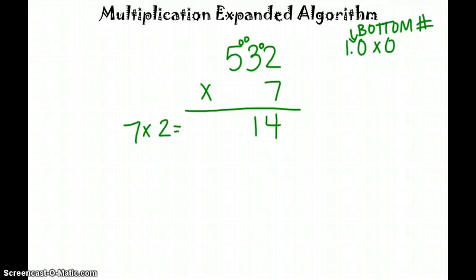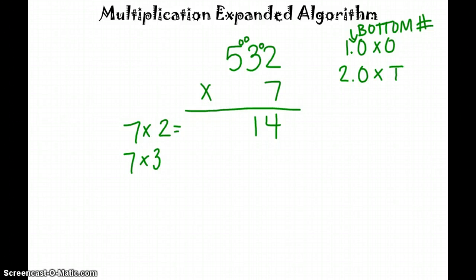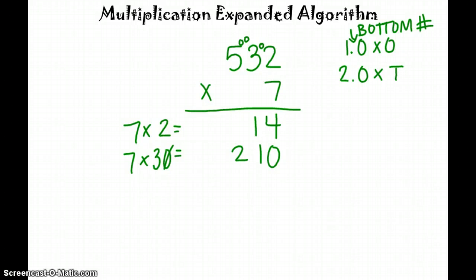Now our second step is the ones place times the tens place. So we're going to take 7 times 30, because it's in the tens place. We can cross out the zero, put it in the ones place, because zero times any number is going to be zero, so there's no ones. And 7 times 3 is 21, so 7 times 30 is 210.